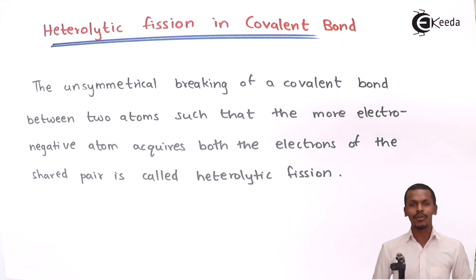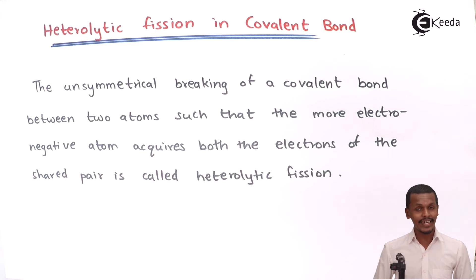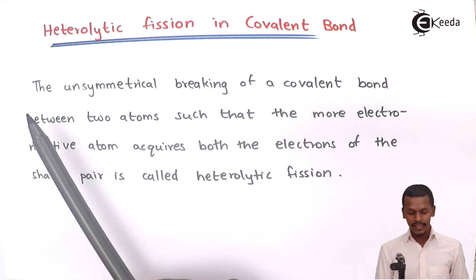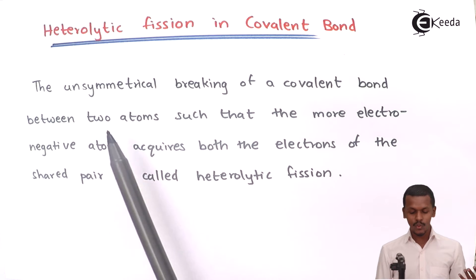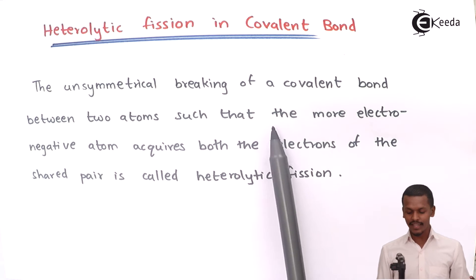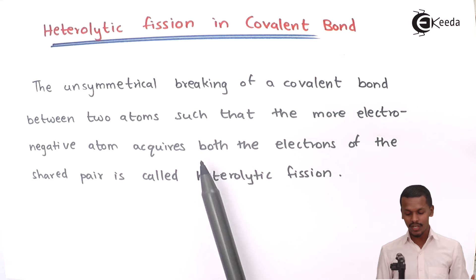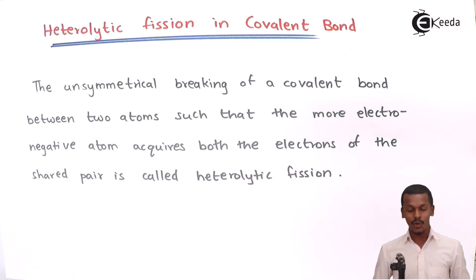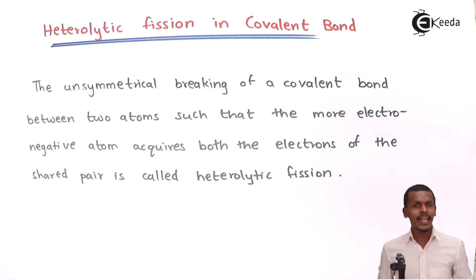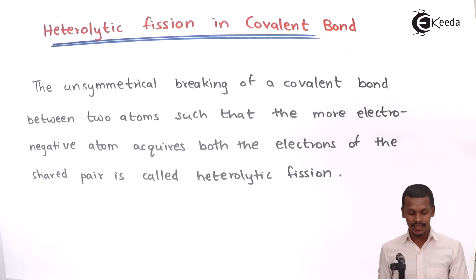Talking about heterolytic fission, we should understand the definition clearly. It is the unsymmetrical breaking of a covalent bond between two atoms such that the more electronegative atom acquires both the electrons of the shared pair. This is called heterolytic fission. Let me give you an example so we can easily understand what heterolytic fission actually is.